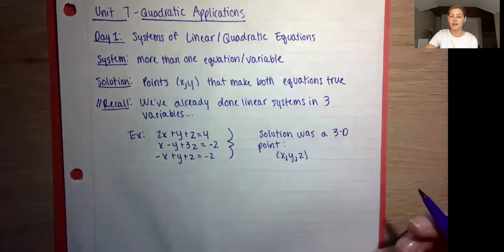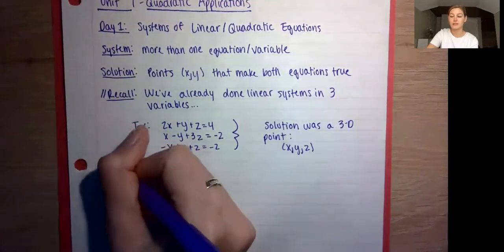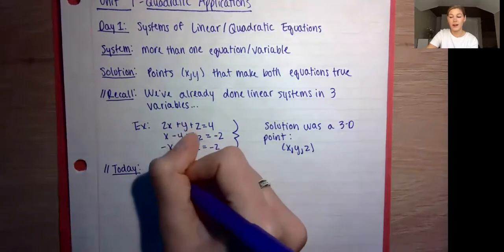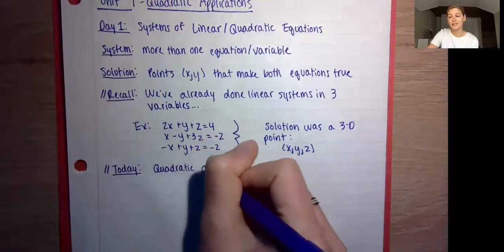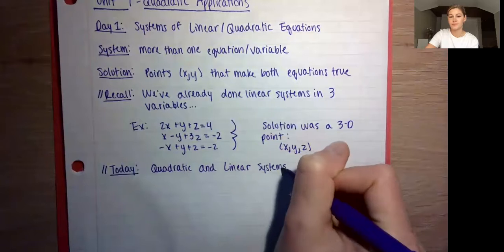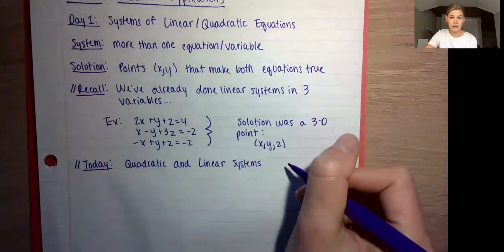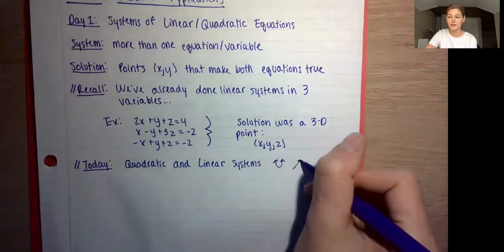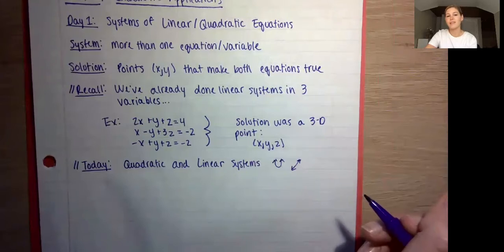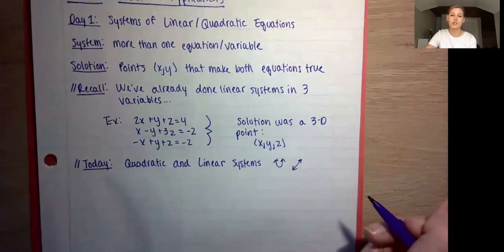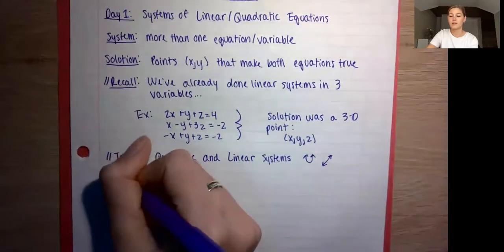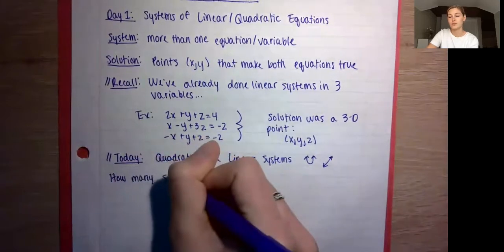So you looked at systems like that, did elimination, and found a solution that was a 3D point with coordinates (x, y, z). Today, we're going to talk about new systems involving quadratic and linear equations. Instead of talking about lines intersecting, now we're talking about quadratics intersecting with lines. You should be visualizing this and thinking: what can solutions to a quadratic parabola intersecting a line look like? How many solutions are possible?